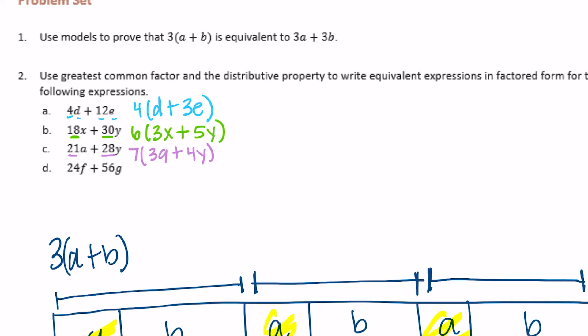And the last one, 24f plus 56g. We need to find a common factor of 24 and 56. I think it would be 8. Let's try 8. So 8, 24f divided by 8 would be 3f plus 56g. So 8 times 3f plus 7g.